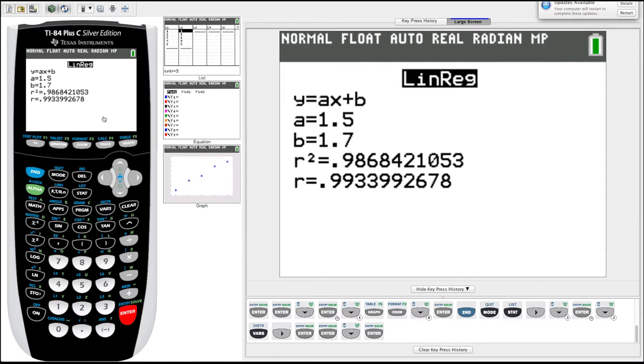There it is. Y equals ax plus b is the form. A will be 1.5. B will be 1.7. You could have manually entered that into y1 yourself, but it prompts you to, if it wants to store it automatically, then we have our r squared and our r. You'll remember that those are a measure of how well the data fits to the line. Pretty good, 0.99.